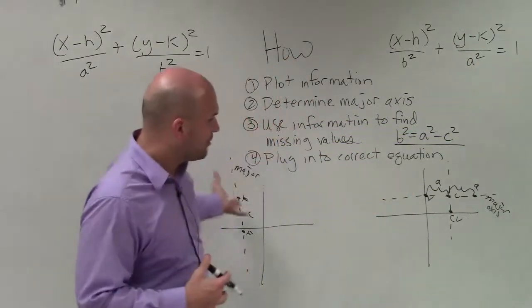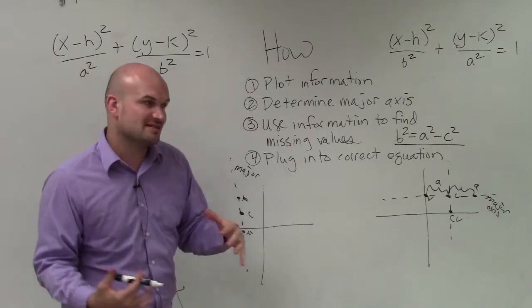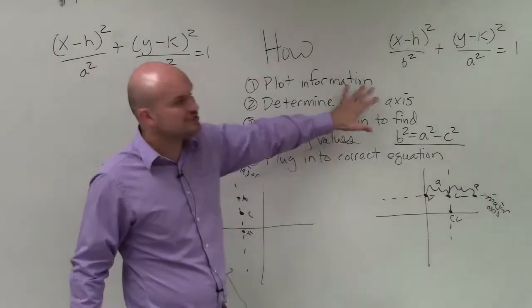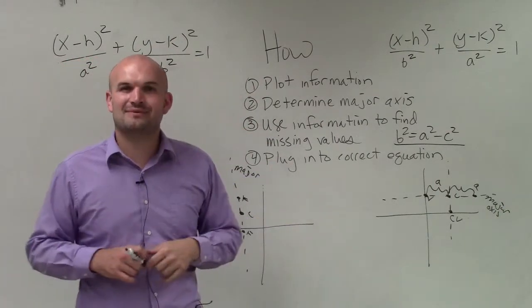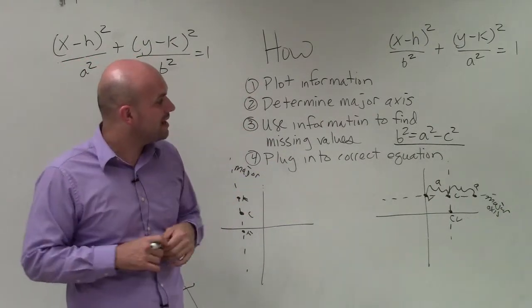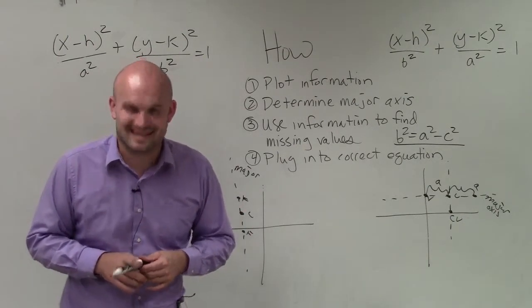So by plotting the points, identifying which equation we're going to write it in, finding out all of our missing values, then we simply just plug it into our equation, which correlates to our axis of symmetry, and then, ladies and gentlemen, we can graph. So there you go. Ladies and gentlemen, that is how you write the equation of an ellipse. Thanks.